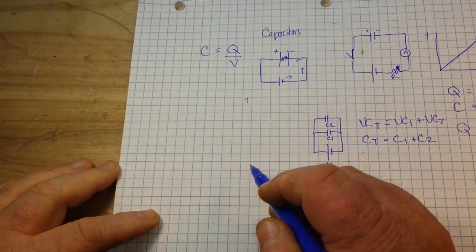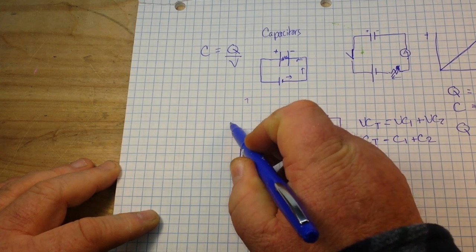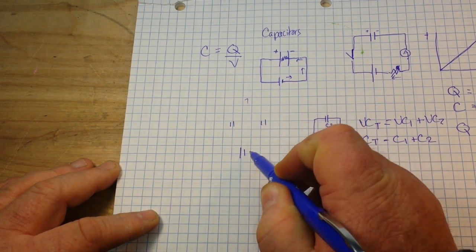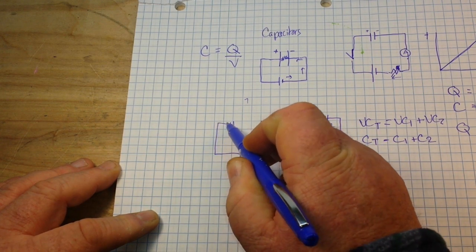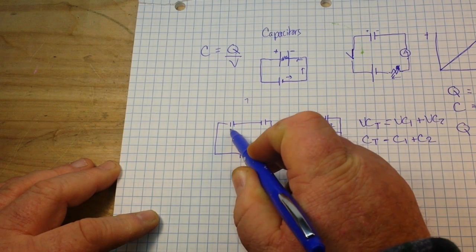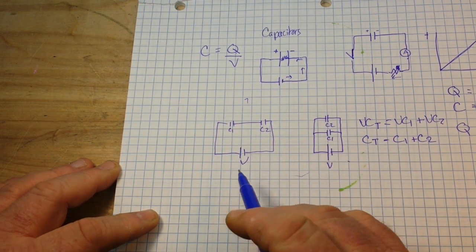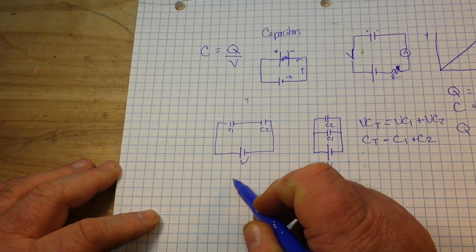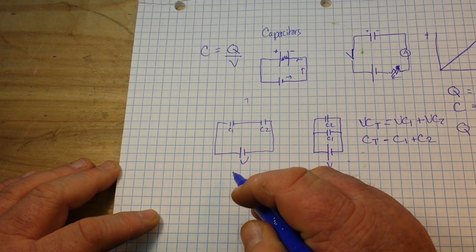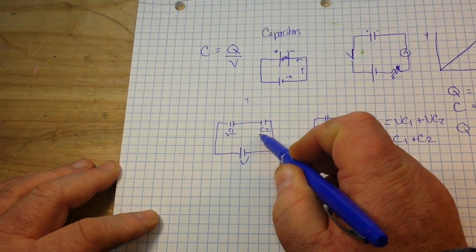So, pretty simple. There's our battery. There's our capacitors. C1, C2, and V. Now, according to Kirchhoff's law, well, let's call this a voltage here.